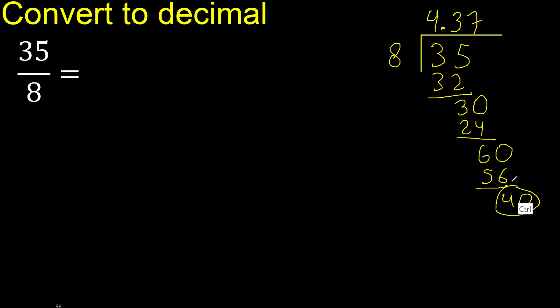Point is here. 40. 8 multiply by 5 is 40. 40 minus 40, 0. 0, therefore finish. Finish.